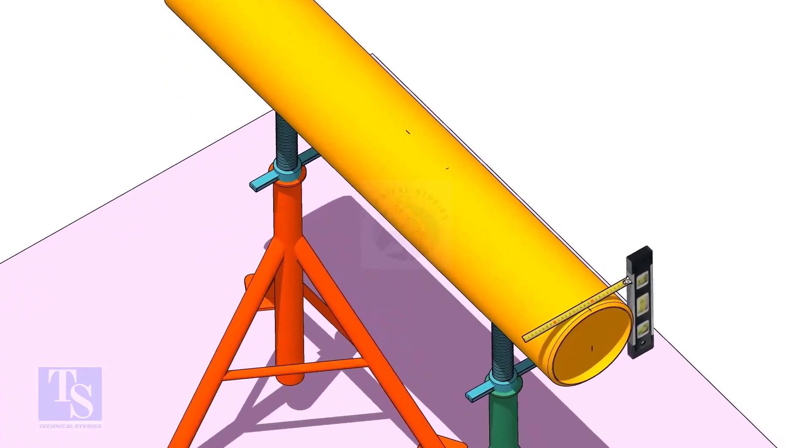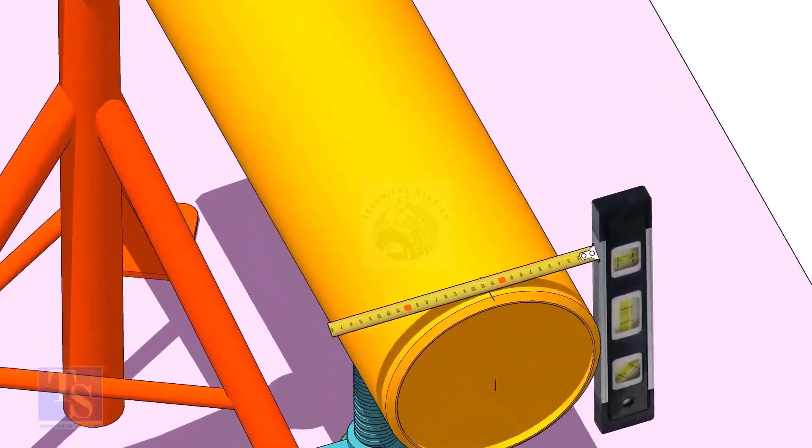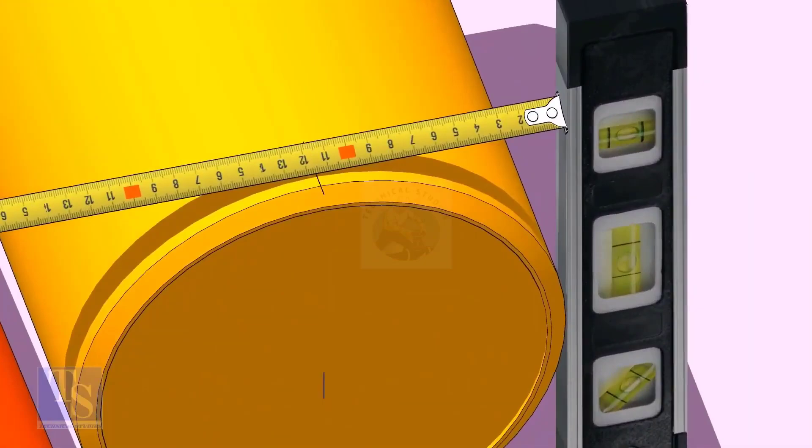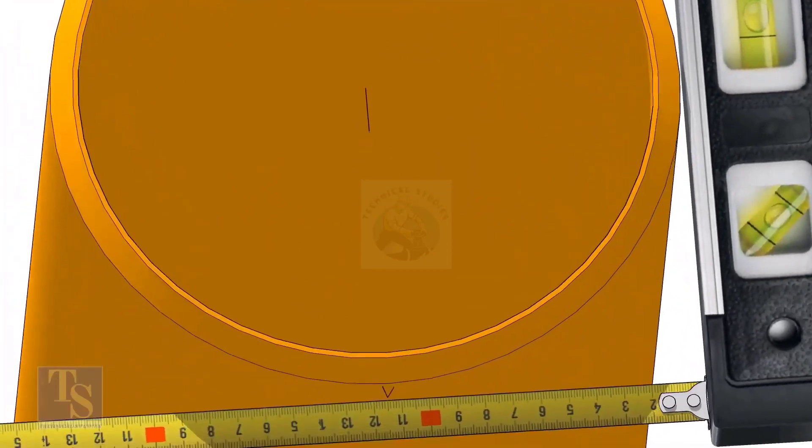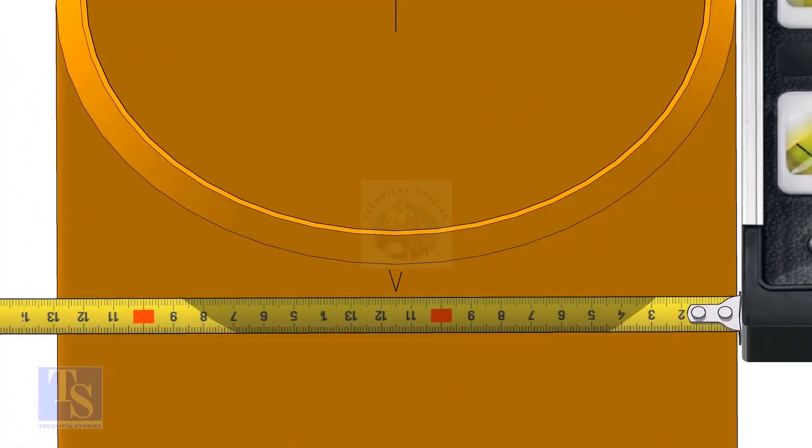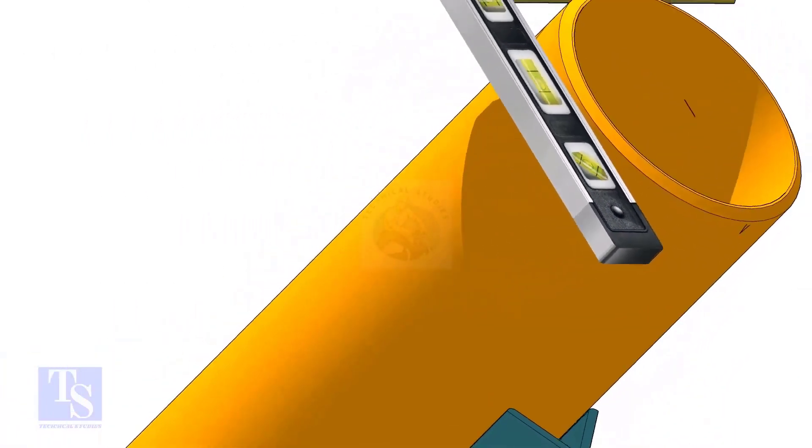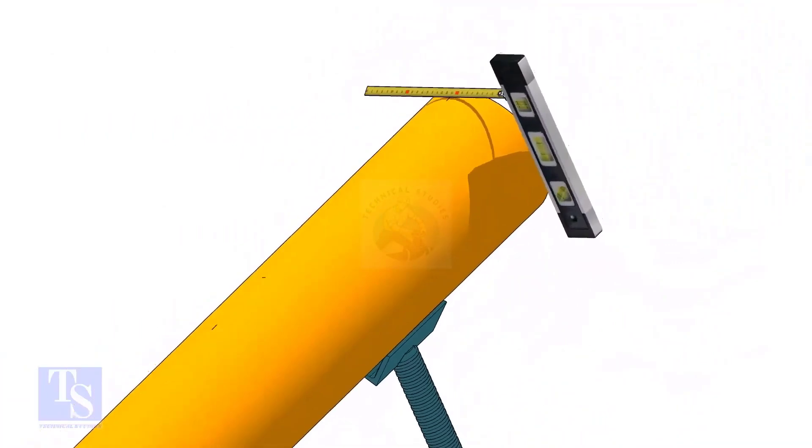Mark the center line of the header on the top and the bottom. Hold a level bottle firmly and vertical at the side of the pipe as shown, mark half OD at the top and the bottom side of the pipe. Cross check the dimension from the opposite side to ensure the marking is correct.